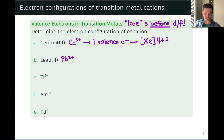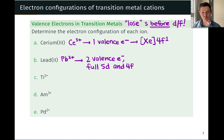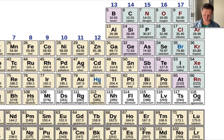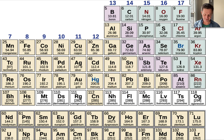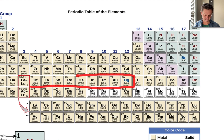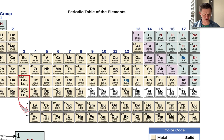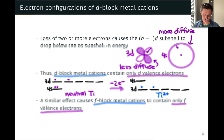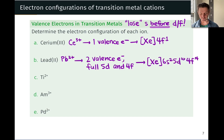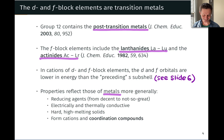Lead 2+: lead is actually a main group element in group 14. Losing two electrons takes it back to mercury. It has a full 5D subshell and a full 4F subshell, and the two valence electrons are lost from the P subshell. So the electron configuration is [Xe]6s²5d¹⁰4f¹⁴. Let's verify this on the periodic table — starting at xenon, we have 6s², the entire 4f¹⁴, and then the full 5D subshell.